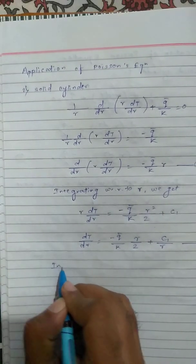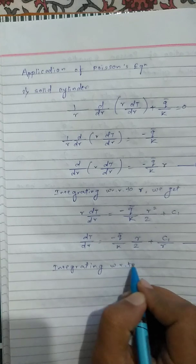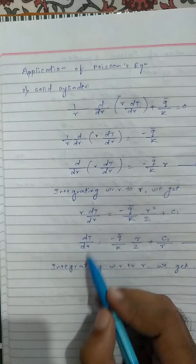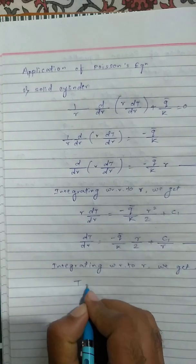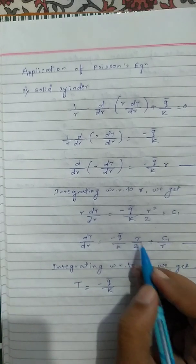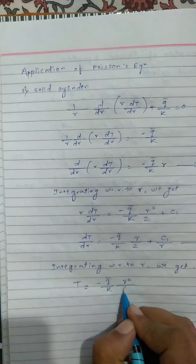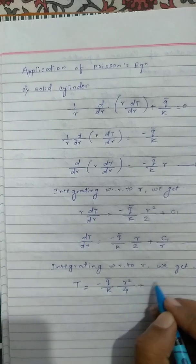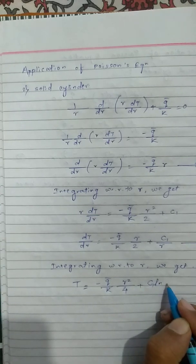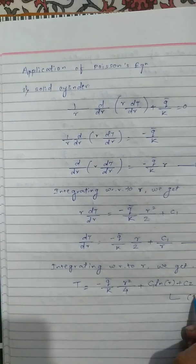Integrating equation 2 again with respect to r, we obtain the temperature profile: T = −(q̄/k)(r²/4) + C₁ ln(r) + C₂. This is equation number 3, the temperature profile with two unknowns C₁ and C₂.